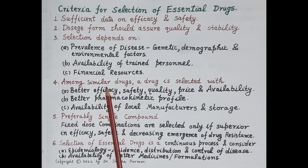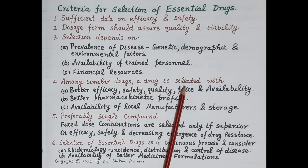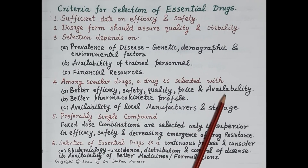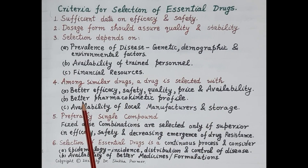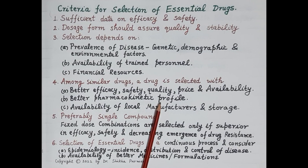Among similar drugs — as we have seen with omeprazole, whose alternatives include rabeprazole and pantoprazole — a molecule or drug is selected based on better efficacy, safety, quality, price, and availability. The selected molecule should also have a better pharmacokinetic profile, meaning better ADME: administration, distribution, metabolism, and excretion qualities.